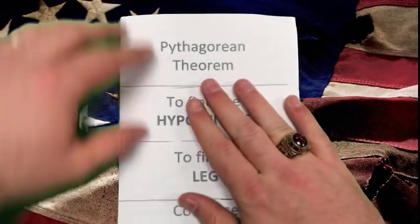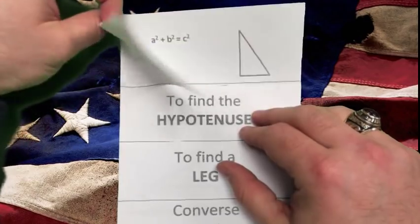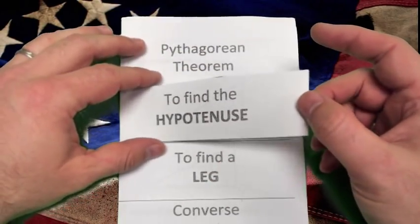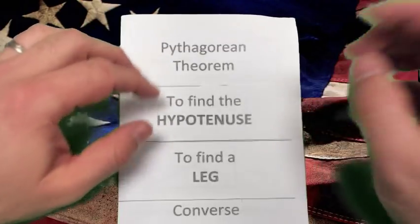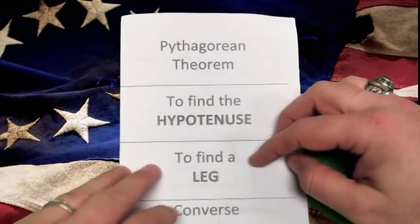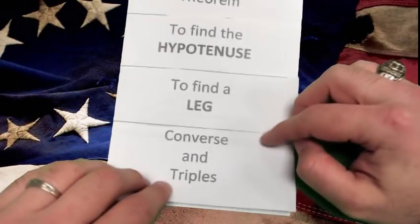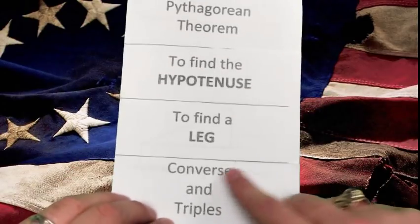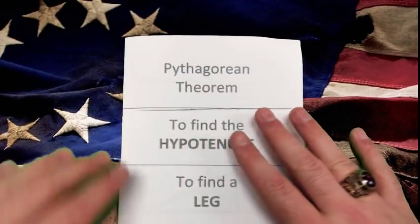You can tell by looking at this thing that we've got four different sections. We've got the general definition of the Pythagorean Theorem and its parts, how to find a hypotenuse, how to find a leg, and then also the Pythagorean Theorem Converse as well as Pythagorean Triples. We're not going to spend too much time on those, but I want you to have some base exposure to it.